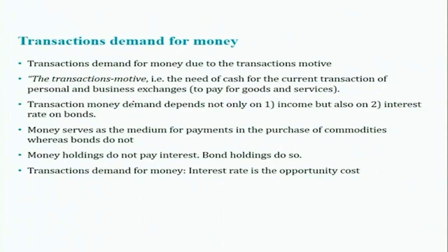Transaction demand for money is due to the transaction motive — the need for cash for current transactions of personal and business exchanges. You demand money to pay for goods and services, to finance your day-to-day transactions. The quantity of money demanded for transaction purposes depends not only on income — transaction demand for money is positively related to income. When your income increases, you keep more money for transaction purposes because you have more income and will be buying more goods and services. But it also depends on the interest rate on bonds.